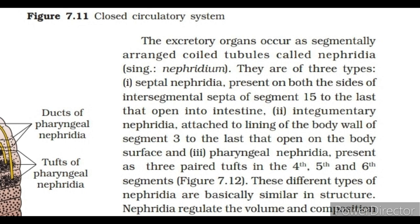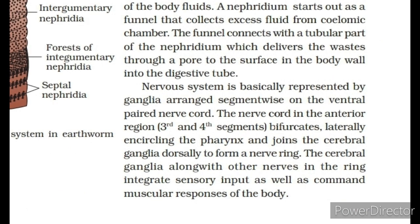The excretory organs occur as segmentally arranged tubules called nephridia. They are of three types: I. Septal nephridia, present on both sides of intersegmental septa from segment 15 to the last, that open into the intestine; II. Integumentary nephridia, attached to the lining of the body wall from segment 3 to the last, that open on the body surface; and III. Pharyngeal nephridia, present as three paired tufts in the 4th, 5th and 6th segments. Nephridia regulate the volume and composition of the body fluids. A nephridium starts as a funnel that collects excess fluid from the coelomic chamber; the funnel connects with a tubular part that delivers wastes through a pore to the body wall surface or into the digestive tube.